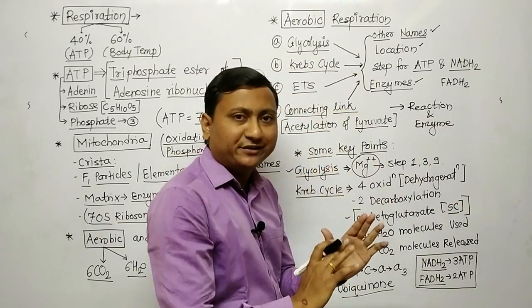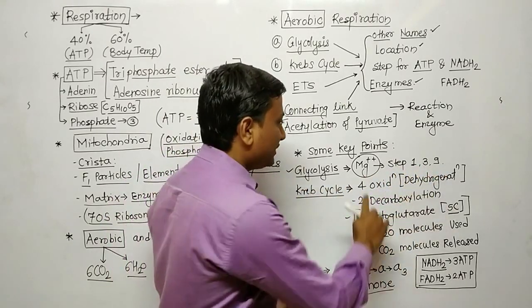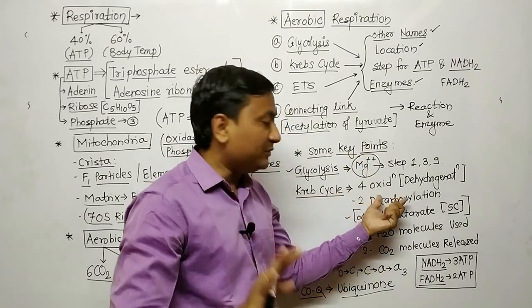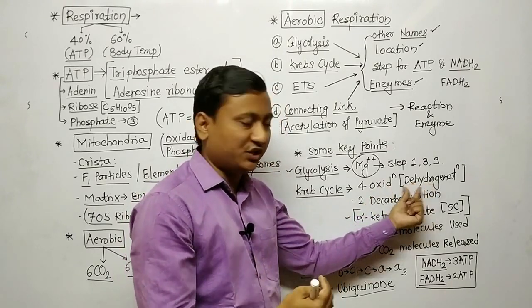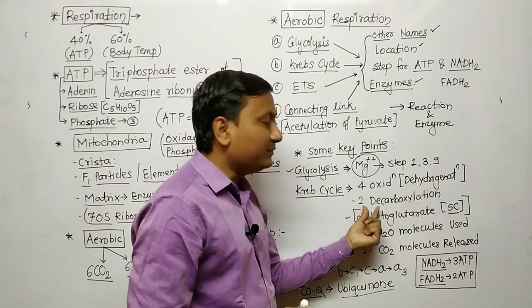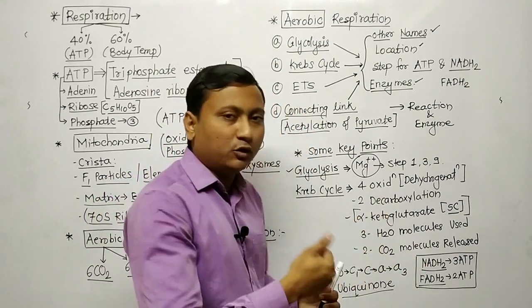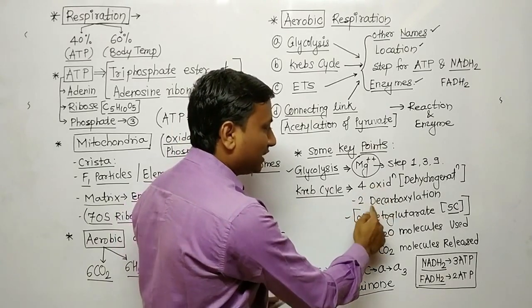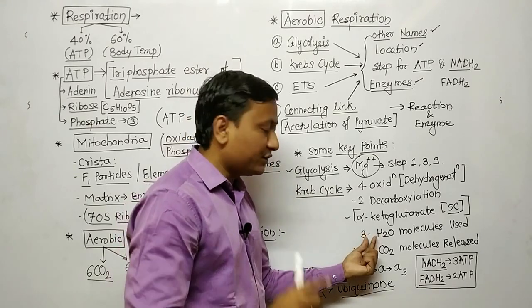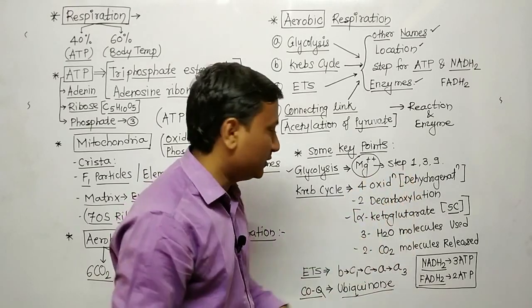The key points of the three pathways: in glycolysis, steps 1, 3, and 9 are important. In the first step, Mg++ is used as a cofactor. In the Krebs cycle, there are 4 times oxidation — also called dehydrogenation, meaning removal of hydrogen — 2 times decarboxylation when CO2 molecules are released, and 3 times water molecules are used, that is hydration. So: 4 times oxidation, 2 times decarboxylation, 3 times hydration.